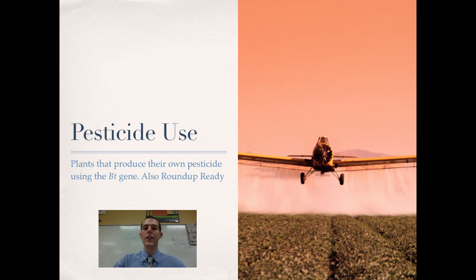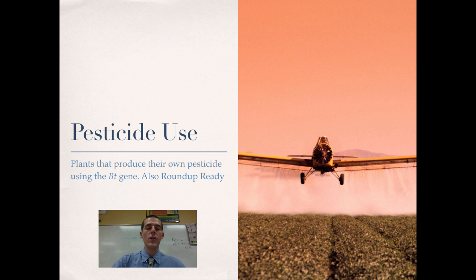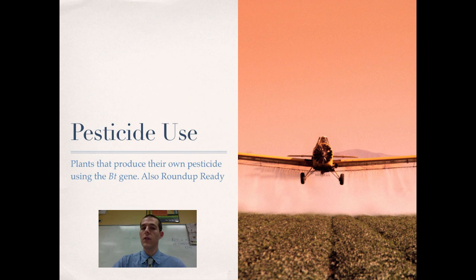Pesticide use is another problem that can be addressed through the use of genetically engineering organisms. There is a soil bacteria called Bacillus thuringiensis that produces a natural insecticide — the stuff just naturally comes out of the bacteria and it kills insects. Researchers have been able to take that gene and stick it into various crops. Those crops then produce their own natural pesticide, which means that the crops don't need to be sprayed with pesticides. That has a twofold benefit: for farmers, it's cheaper because pesticides are expensive, and for the consumer, it's good because we are not eating foods that have been sprayed with pesticides.